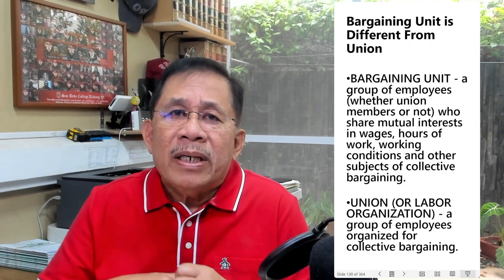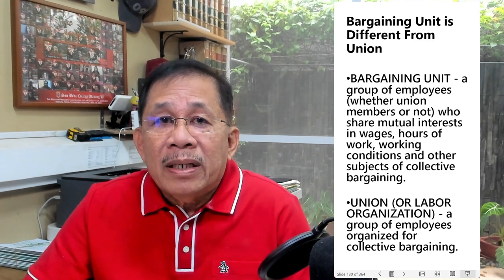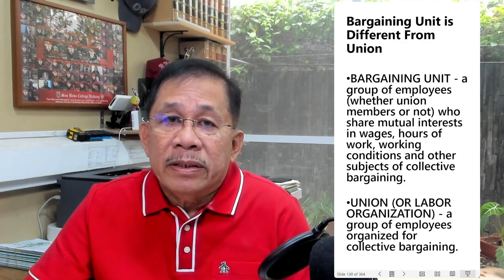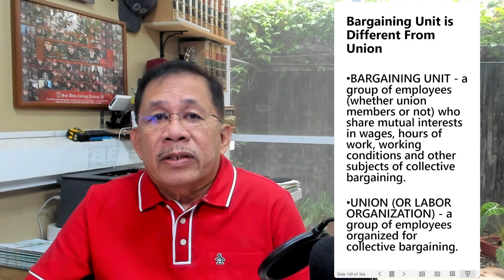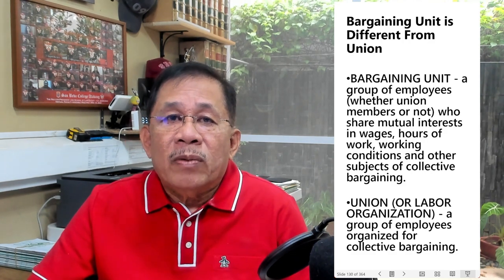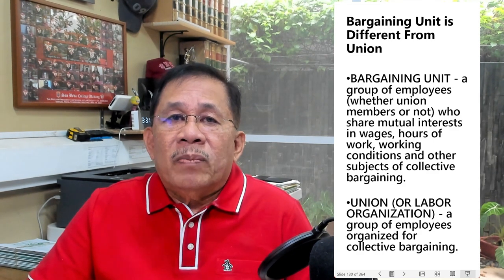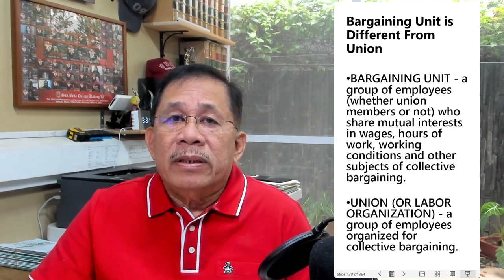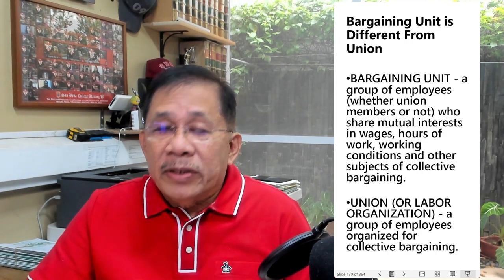The bargaining unit must be appropriate. To be considered appropriate, the bargaining unit must be composed of employees who have substantial mutual interest in wages, hours of work, and other subjects of collective bargaining. That is why a bargaining unit composed of employees with entirely different working conditions is not appropriate. A bargaining unit composed of a mixture of rank-and-file and supervisory employees is not appropriate because there is no mutuality of interest between rank-and-file and supervisory employees.